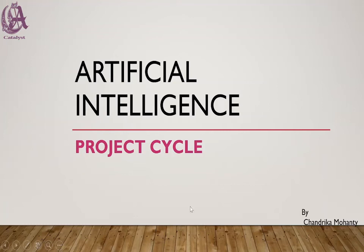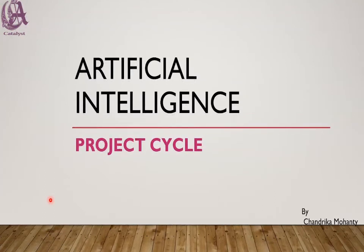Hello viewers, welcome to my channel Catalyst. Today I am going to discuss about the artificial intelligence project cycle. Artificial intelligence is basically a science and engineering which is enabling a machine to think and behave like a human. As humans have problem solving capability and decision making capability, we are now seeing these in our machines. There is a project cycle involved in every kind of technology.